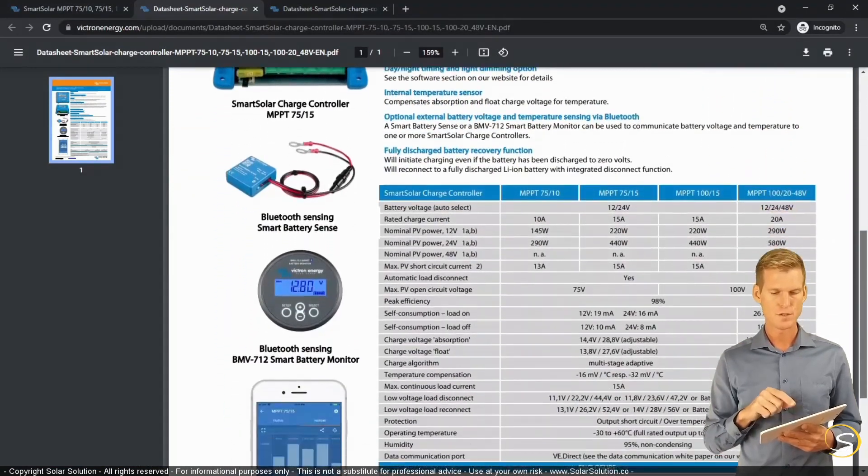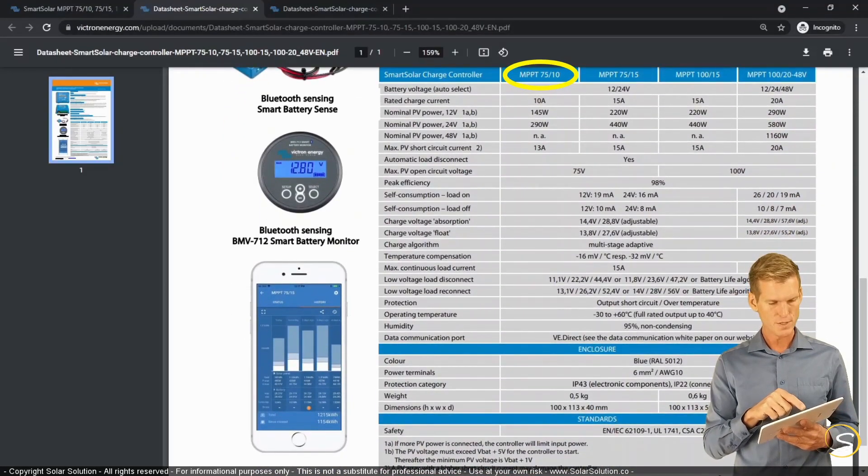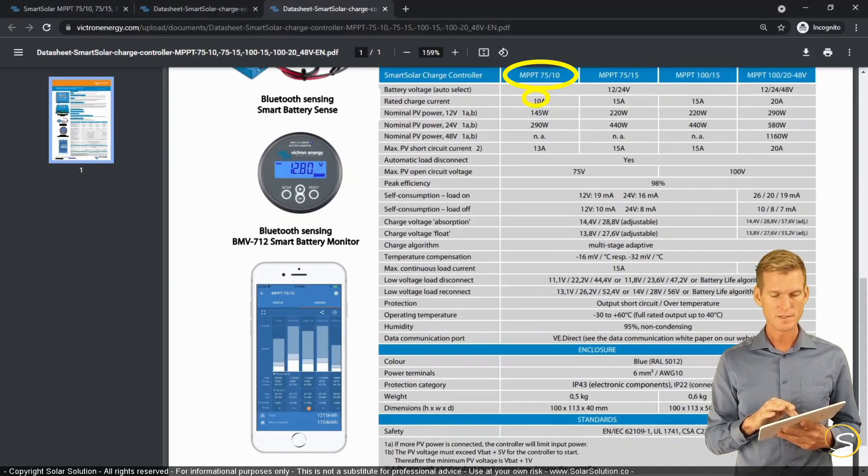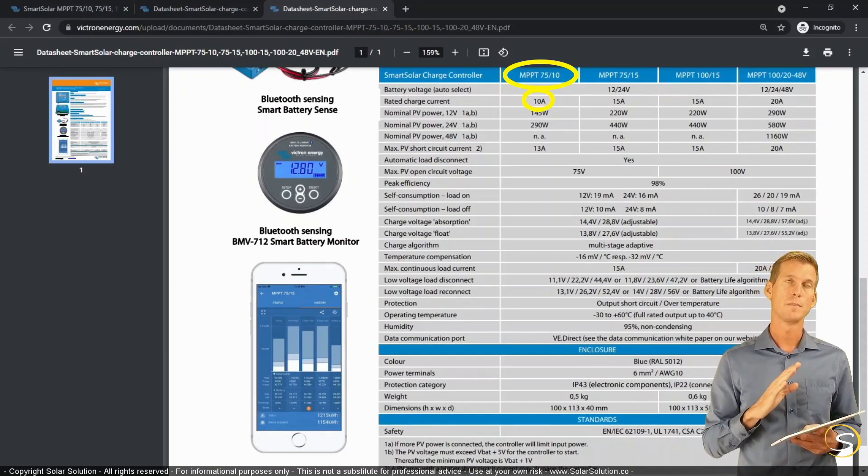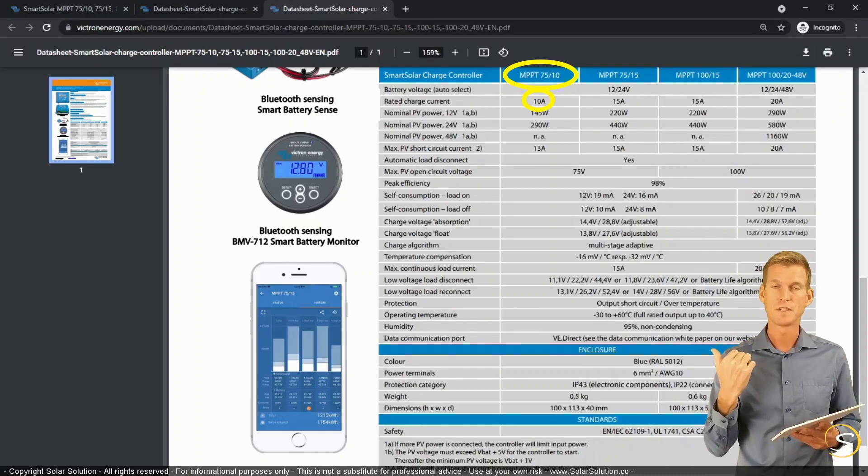So let's look at the first model, the Smart Solar Charge Controller MPPT 7510. So the first value we see here is the rated charge current of 10 amps. So this is the maximum amount of power that can be fed from the charge controller towards your load. So if you're charging a battery,